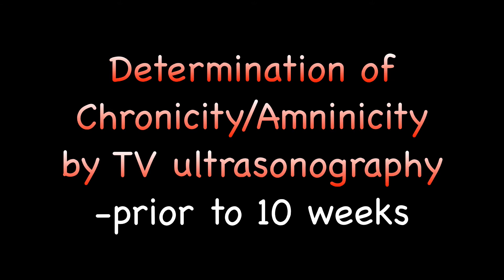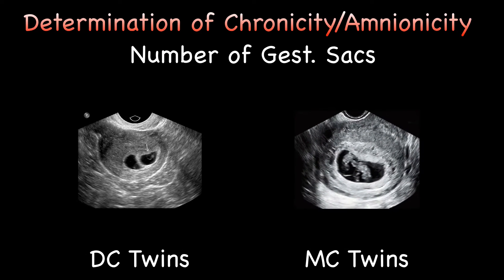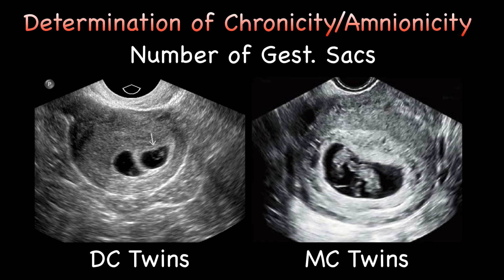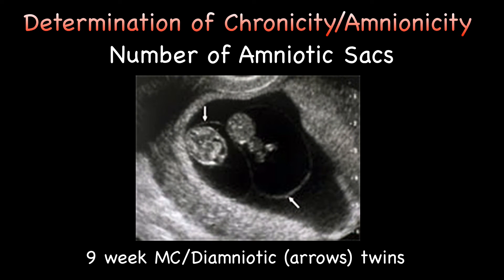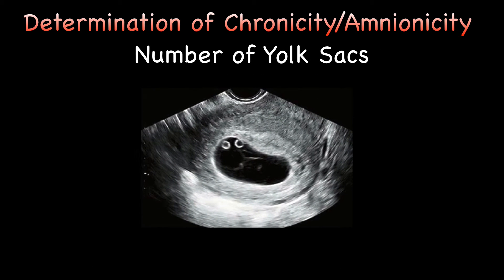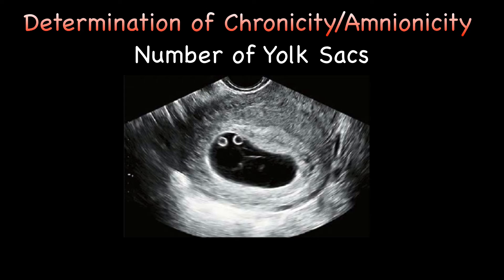Before 10 weeks gestation, several sonographic findings can help determine chorionicity. First, the number of gestational sacs: the presence of two gestational sacs implies a dichorionic pregnancy, while a single gestational sac with two identified heartbeats implies a monochorionic twin pregnancy. Second, the number of amniotic sacs: if two separate and distinct amnions are identified before 10 weeks, it suggests diamniotic twins. Third, the number of yolk sacs is an accurate method of determining amnionicity before the amnion can be visualized — monoamniotic twins have a single yolk sac, whereas diamniotic twins usually have two.